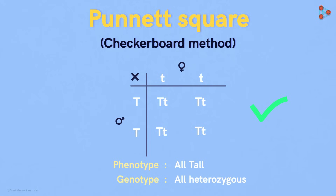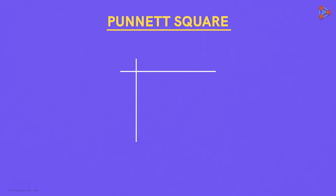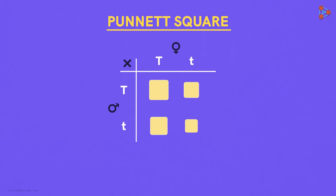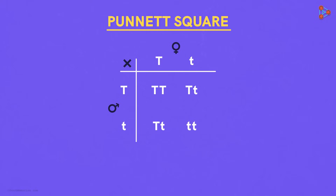Now let's do this cross one more time to know whether we have understood it correctly. Let's cross any two from the F1 generation. Again, we first draw these lines to form a table and write the male and the female symbols here. Now it's the turn of the genes, so we write the respective genes here and here. Why don't you try filling in these four slots? These are the combinations that we obtain on crossing these plants.